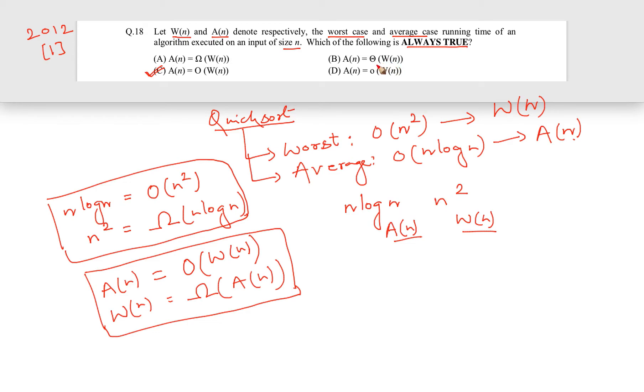What about this little-o? So a(n) is equal to little-o of w(n). But we can say, see here, that it is big O. What is little-o?